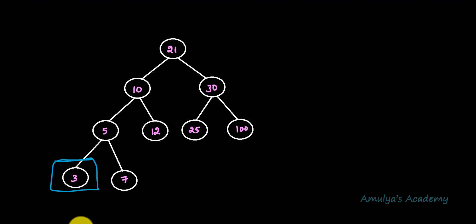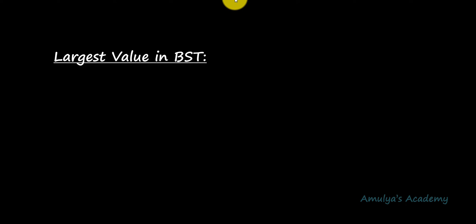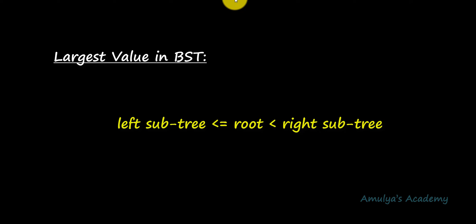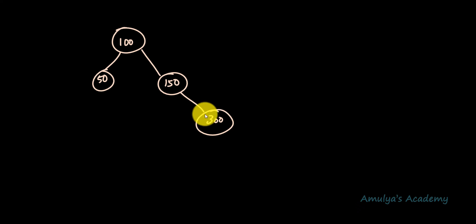Next let's talk about finding the greatest or largest value in the binary search tree. If I want to find the largest value, I need to find the value of the rightmost node of the right subtree. In the right subtree we have values greater than the root node, so the rightmost node will contain the largest value of the BST. If the right subtree is empty, then the value of the root node will be the largest value in the binary search tree.